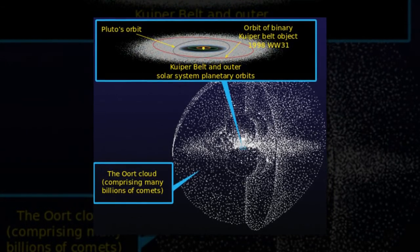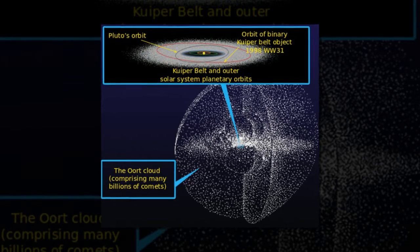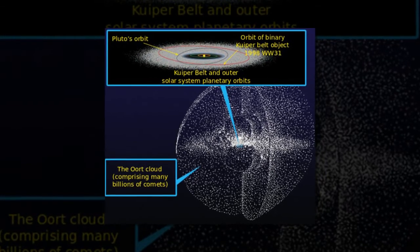There's no need to worry about some pending apocalypse though. Gliese 710 isn't scheduled to have its near-miss with our solar system for another 1.35 million years.